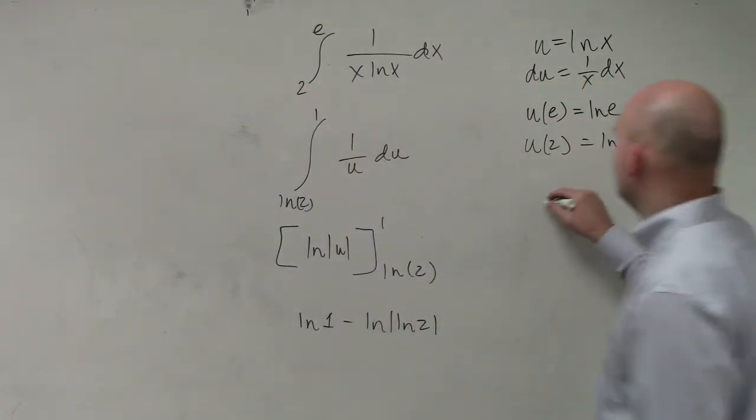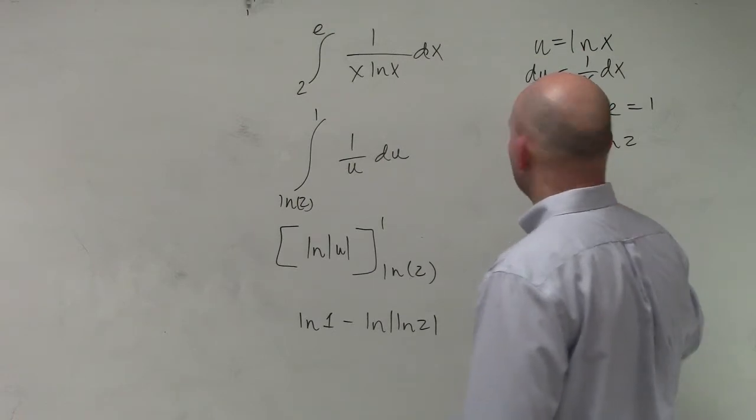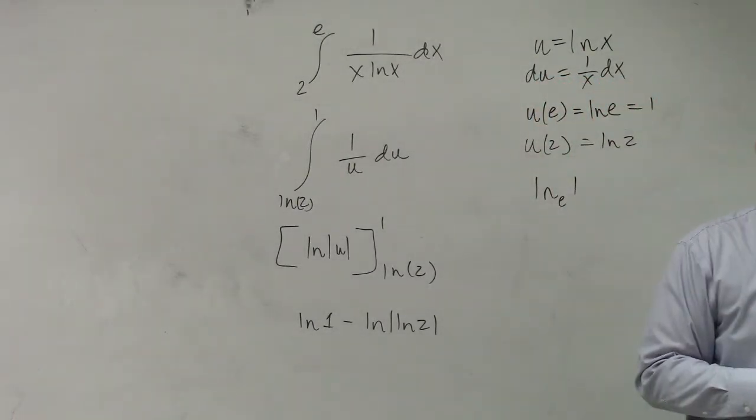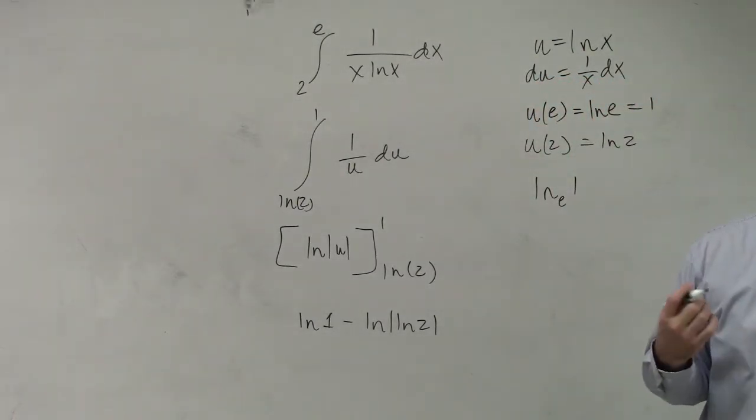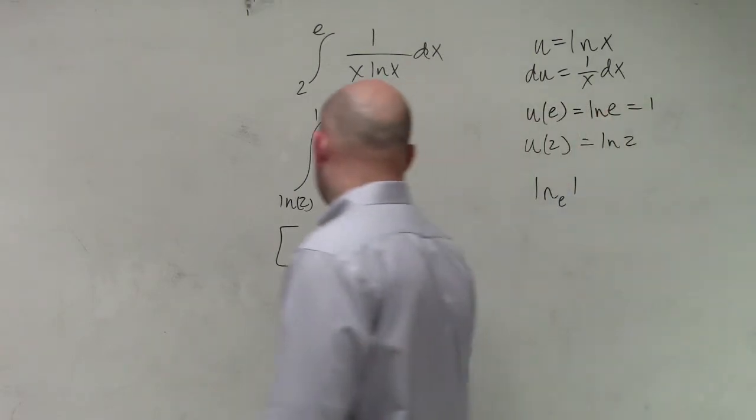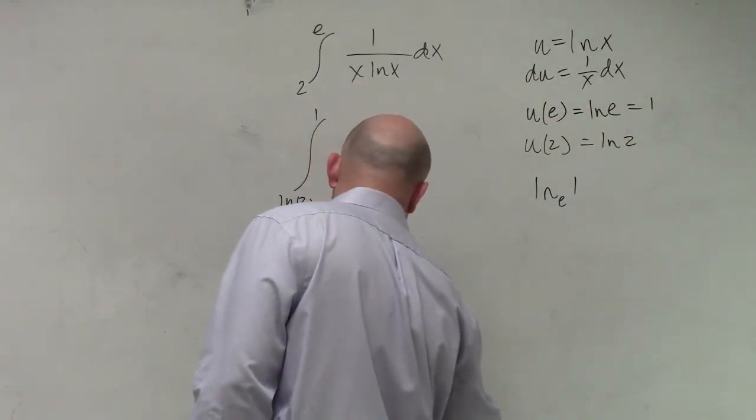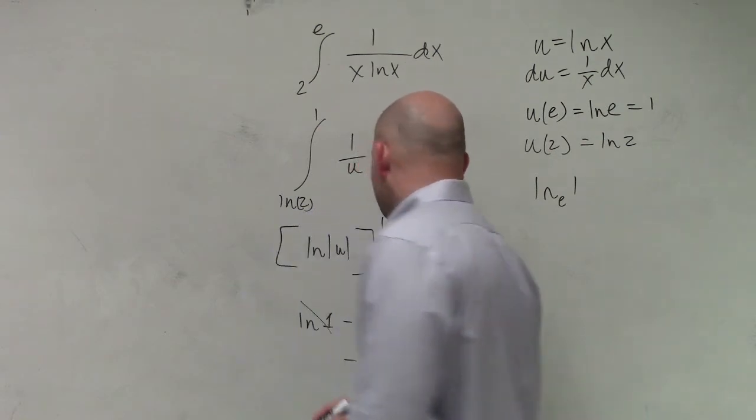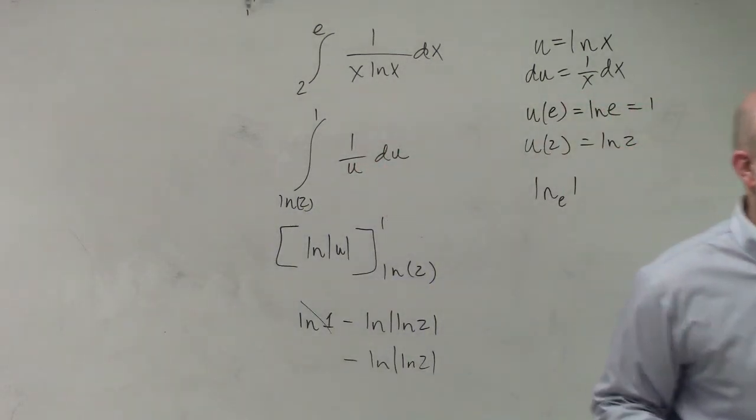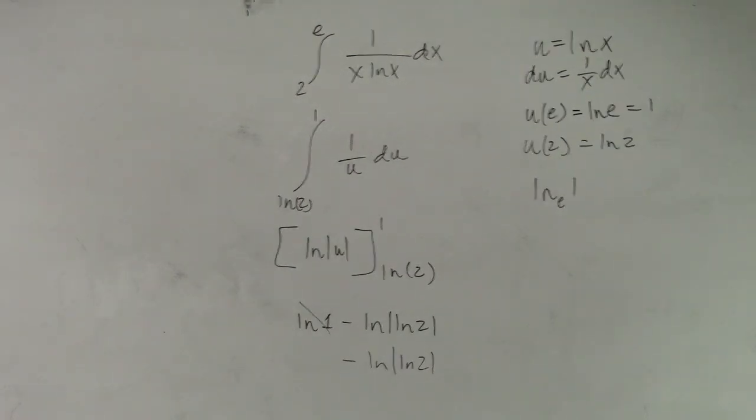Well, ln of 1 is basically saying e raised to what value gives you 1, which is 0. So therefore, your final answer is negative ln of absolute value of 2. All right, I'll do it.